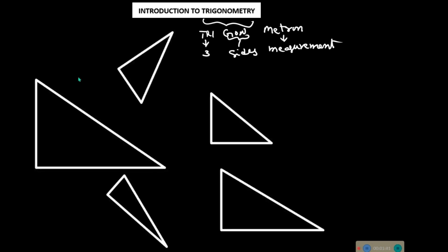Let's see some right angle triangles. I have drawn here a few right angle triangles. This angle here is 90 degrees. It must have 90 degrees for right angle triangles. So all these angles are 90 degrees — we can take it here as 90 degrees. Now we all know about the 90 degrees right angle triangles.